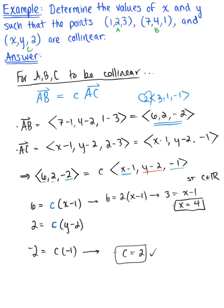Now we want to do the same thing for y. So plugging C equals 2 in, we have 2 is equal to 2 times y minus 2. Dividing both sides by 2, we have 1 is equal to y minus 2. And therefore adding 2 to both sides, we see that y is 3.